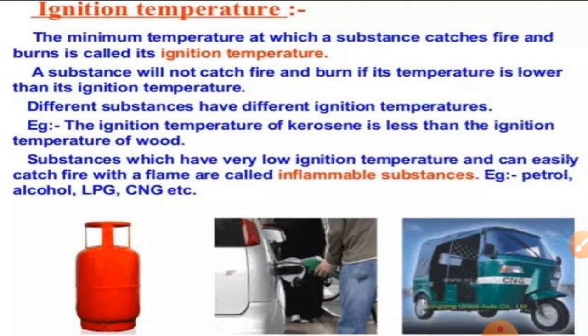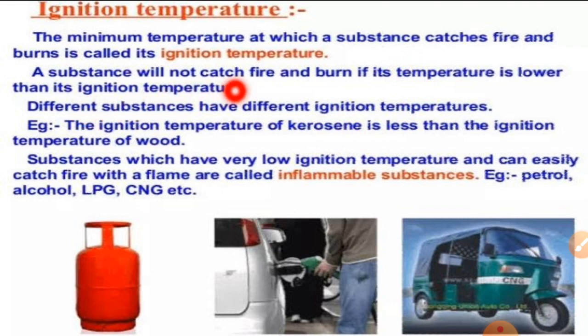Now we will learn about ignition temperature. The minimum temperature at which a substance catches fire and burns is called ignition temperature. Substances with a very low ignition temperature can catch fire rapidly and are called inflammable substances, like LPG, CNG, and kerosene. A substance will not catch fire if its temperature is lower than its ignition temperature. Different substances have different ignition temperatures.